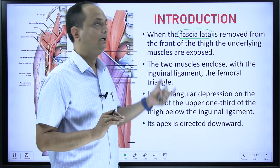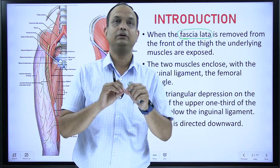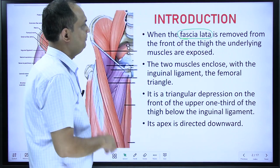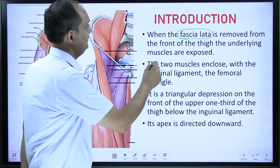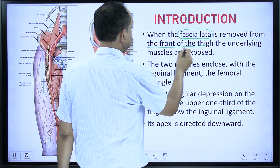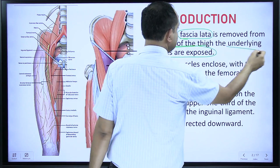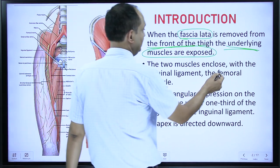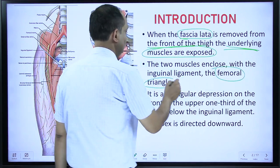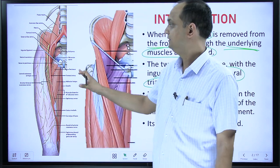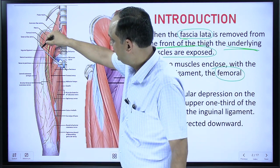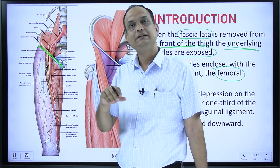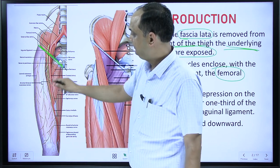When you cut this fascia lata, below that you will find the triangle known as the femoral triangle. This femoral triangle is not visible as a depression on the front of thigh because it is filled with contents and fibro-fatty tissue. This triangular area is only visible when you remove the deep fascia or fascia lata.